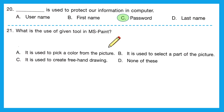Question 21: what is the use of the given tool in MS Paint? The tool shown is a pencil, generally used for free drawing or free writing. Option A — used to pick a color, that's the dropper. Option B — used to select a part of the picture, that's the selector. Option C — used to create freehand drawing. That's correct. So option C is the answer.